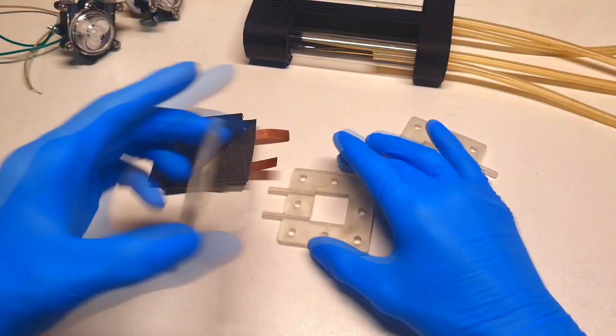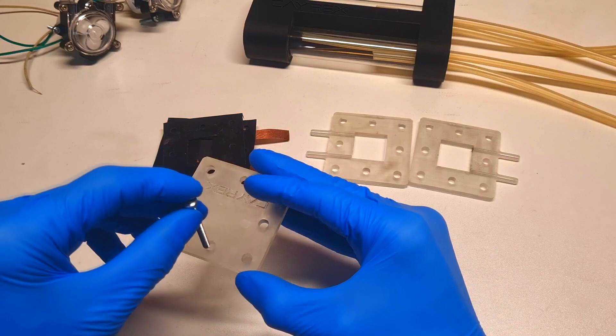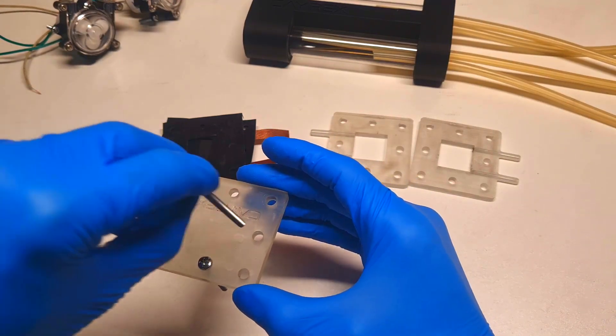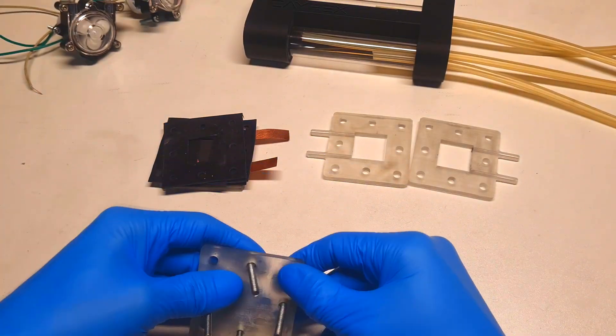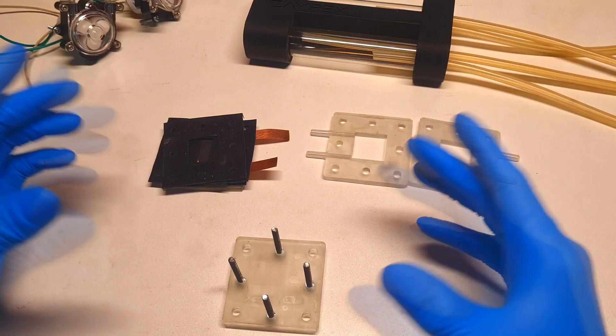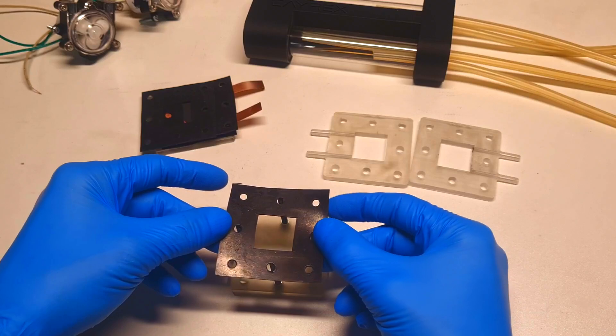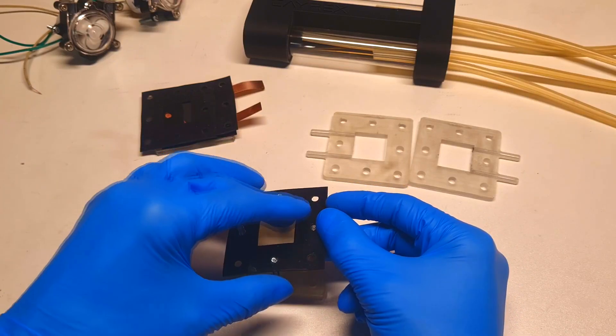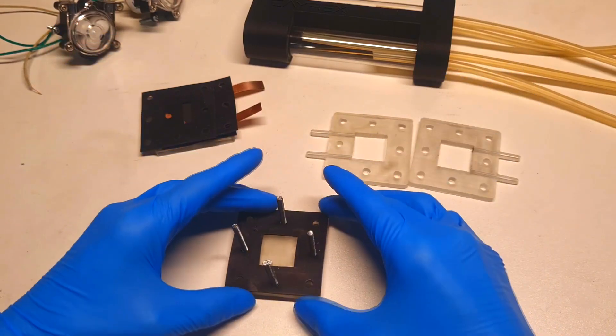And now I will just start with the assembling of this cell. First I put four screws that will hold everything in place. Then I will start with the first gasket, which is in my case some neoprene rubber.